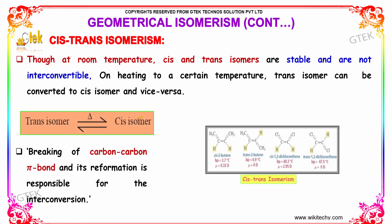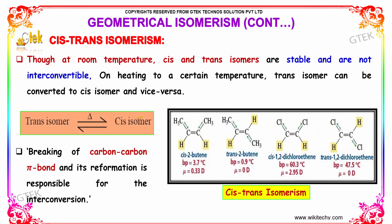Though at room temperature cis and trans isomers are stable and are not interconvertible, on heating to a certain temperature the trans isomer can be converted to the cis and vice versa. Breaking of the carbon–carbon pi bond and its reformation is responsible for this interconversion.